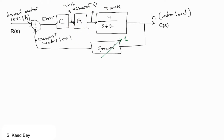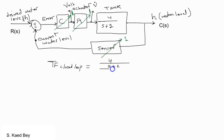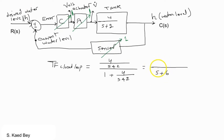For convenience, and for the sake of comparison between the S-domain and the Z-domain, if we assume the controller transfer function is 1 and the actuator transfer function is also 1, the closed-loop transfer function for the block diagram becomes the closed-loop transfer function in the S-domain.